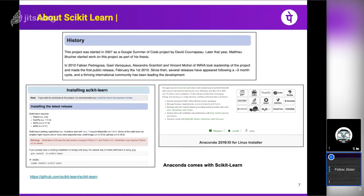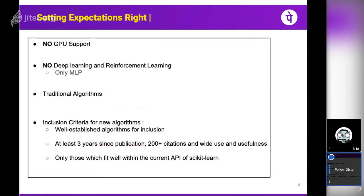Scikit-learn went live with its first version in 2010, so it has been in the data science field for almost nine years now. The latest version is 0.21, and going forward, scikit-learn will only support Python 3 — all previous versions are being deprecated. Installing it is easy: use pip, or if you're using conda, just run 'conda install scikit-learn'. If you're using Anaconda, scikit-learn comes included so you don't need to install it separately.